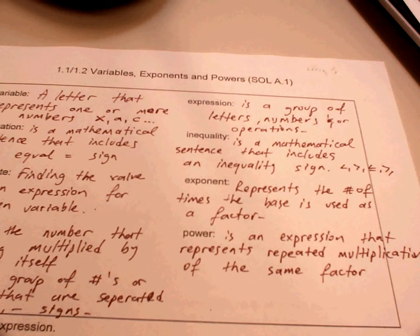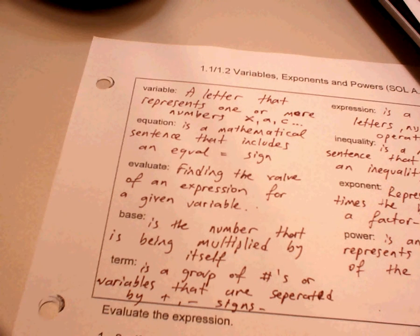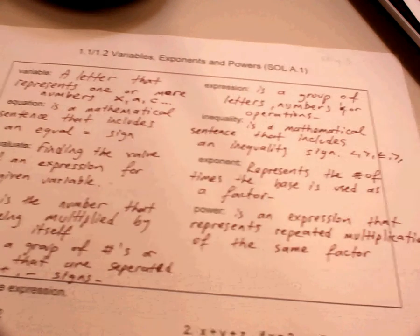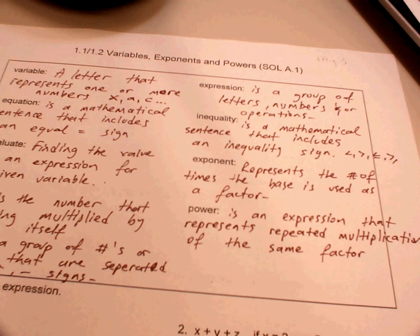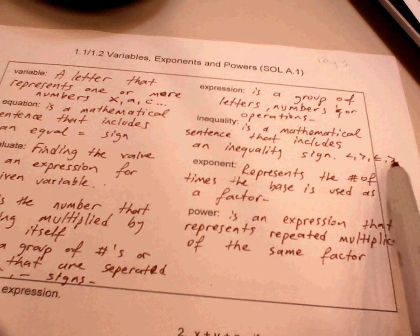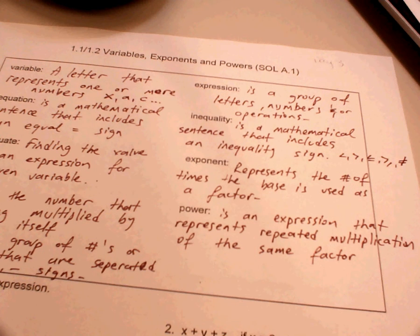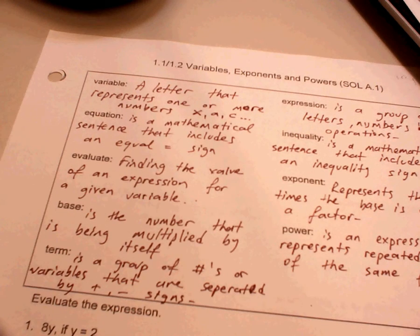An expression is a group of letters, numbers, and/or operations. Our next vocabulary word is equation — an equation is a mathematical sentence that includes an equal sign. Inequality signs can be less than, greater than, less than or equal to, greater than or equal to, or not equal. Evaluate means finding the value of an expression for a given variable.